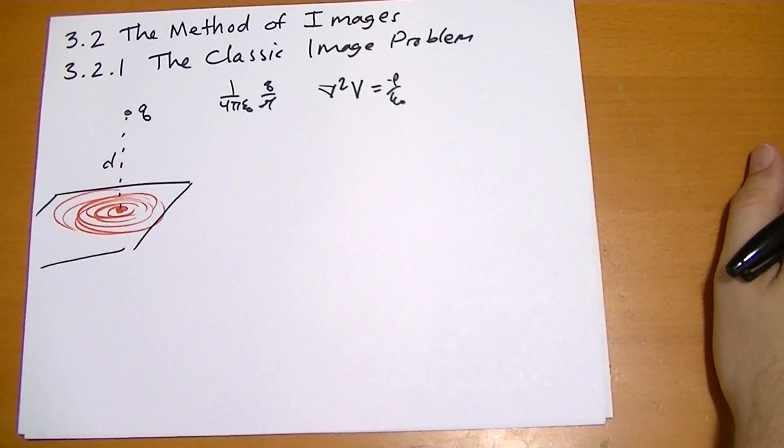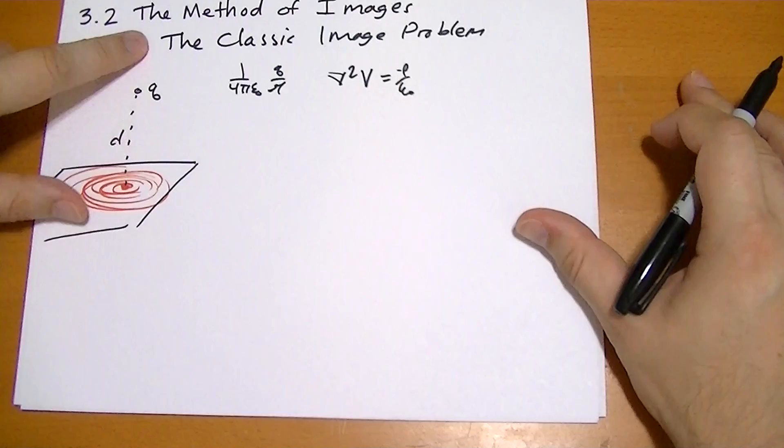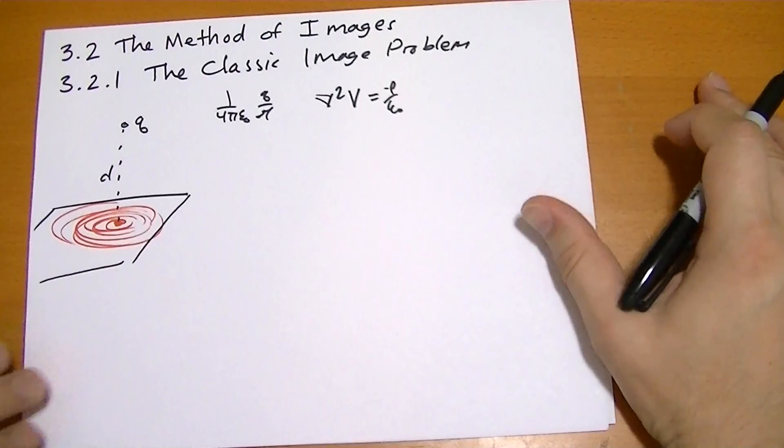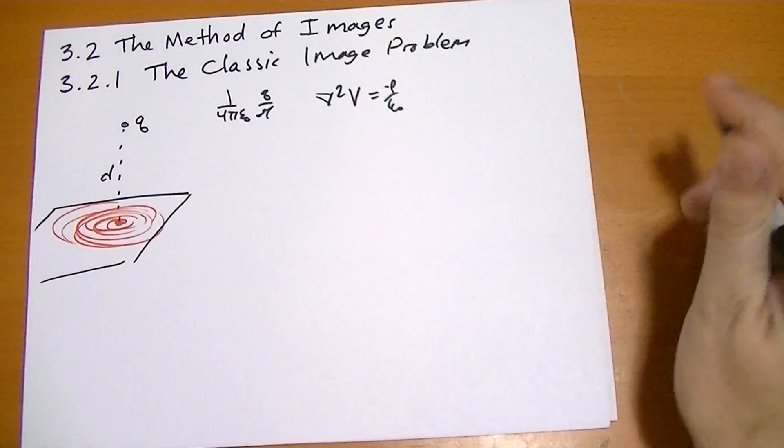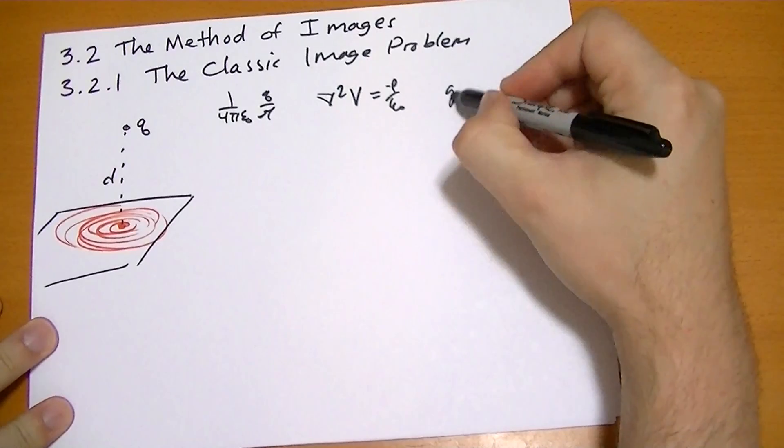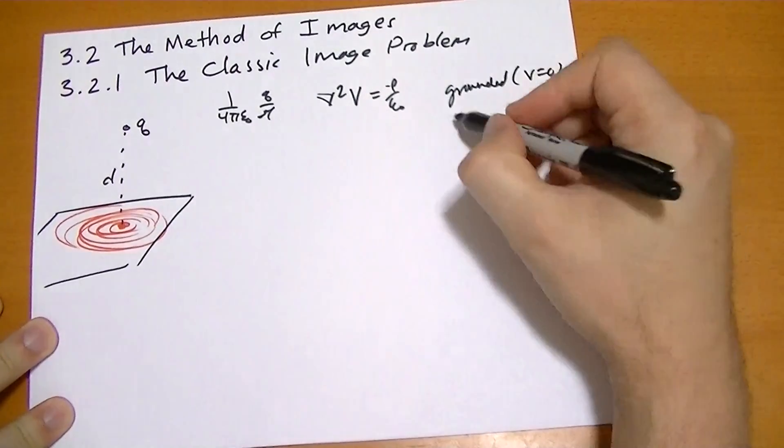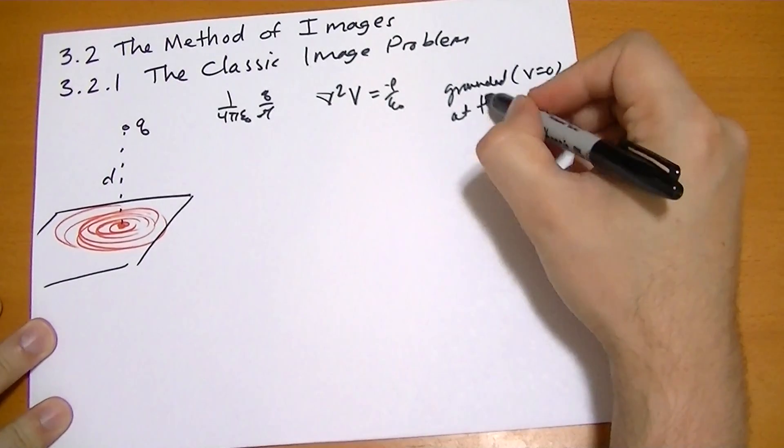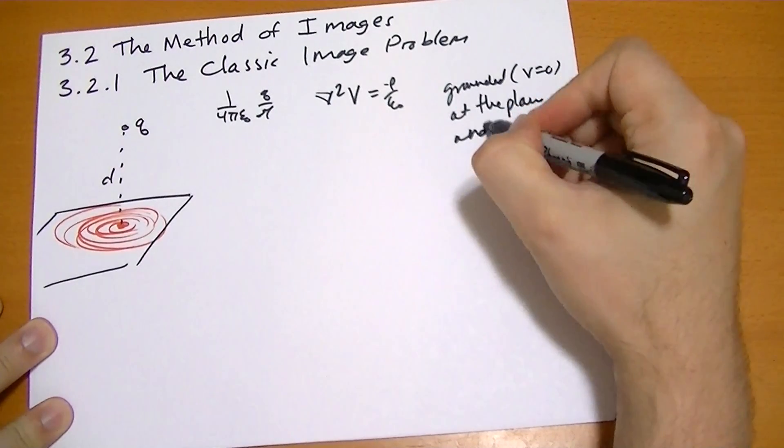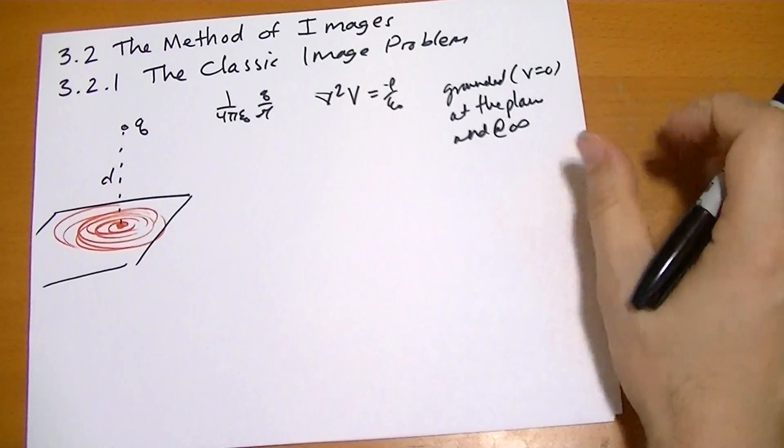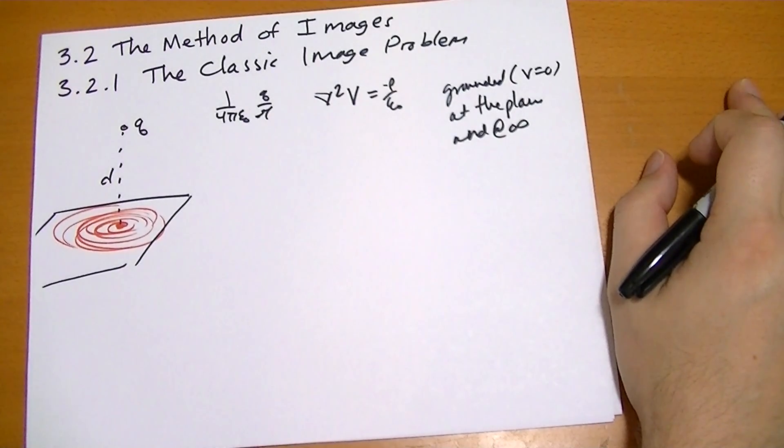So, Poisson's equation for z above zero. Anything above the plane. We're not worried about below the plane. We have boundary conditions at infinity. It's grounded. Remember, grounded means the potential is zero at the plane and at infinity. Alright.